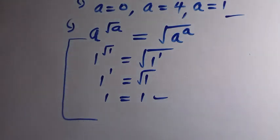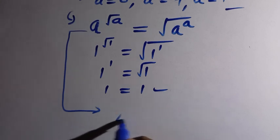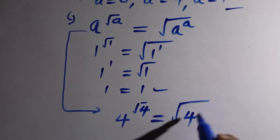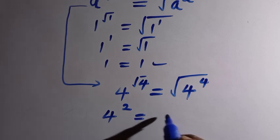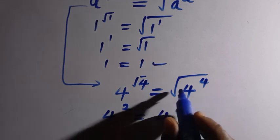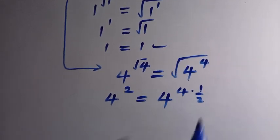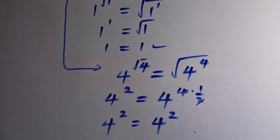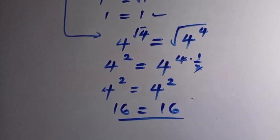Next, substituting a equals 4: we have 4 raised to the power of square root of 4, which is 4 raised to the power of 2, on the left. On the right, we have the square root of 4 raised to the power of 4, which is 4 raised to the power of 4 times 1 over 2, also giving 4 raised to the power of 2. Both sides equal 16, so the left-hand side equals the right-hand side. a equals 4 is verified.